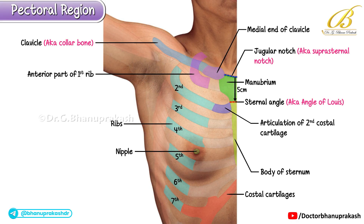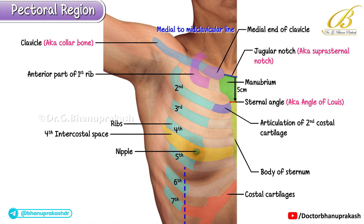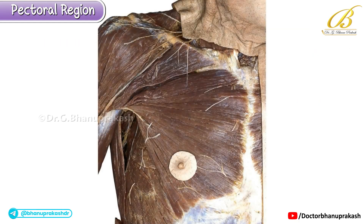The nipple varies slightly in position even in males, but it is typically located in the fourth intercostal space, just medial to the midclavicular line — the vertical line that passes through the center of the clavicle. Here we are looking at the dissected specimen of the pectoral region.